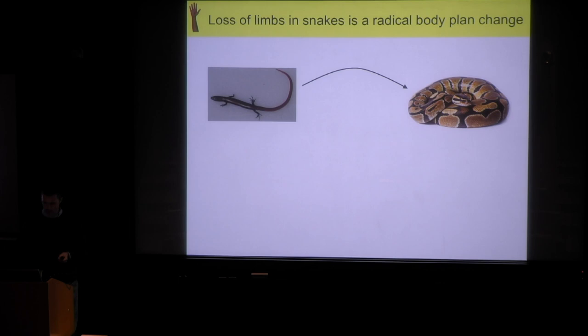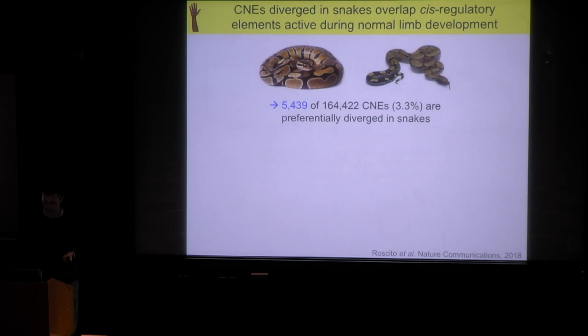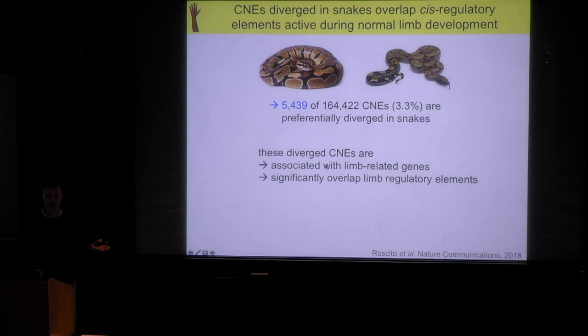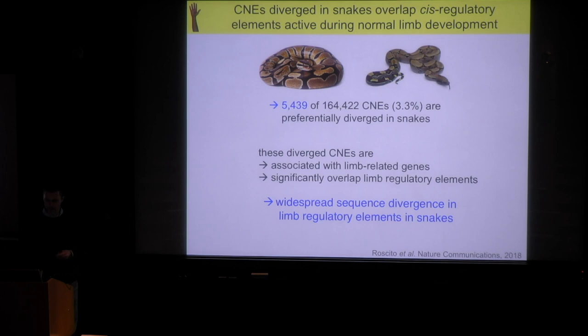As a second trait, we looked at which genomic changes are associated with losing limbs. Using a genome alignment, we obtained a set of 164,000 CNEs conserved across amniotes — mammals, birds, and reptiles. We found significant sequence divergence in snakes in 5,400 of them. For those CNEs, we showed they are preferentially located near limb-related genes. Using ATAC-seq, we showed they also overlap limb regulatory elements active during normal limb development in a lizard that has proper limbs. This shows that, similar to eye degeneration in subterranean mammals, there is widespread sequence divergence in limb regulatory elements in snakes.